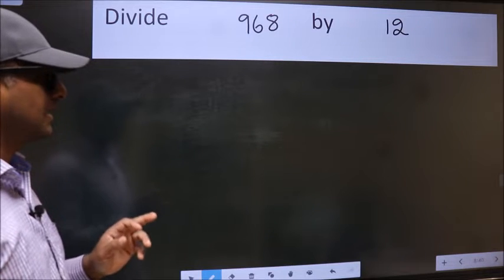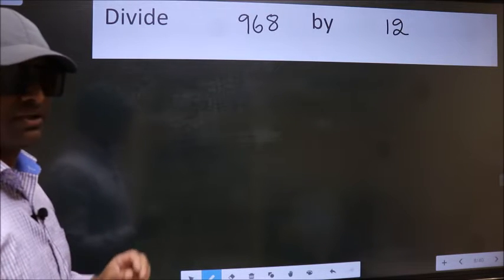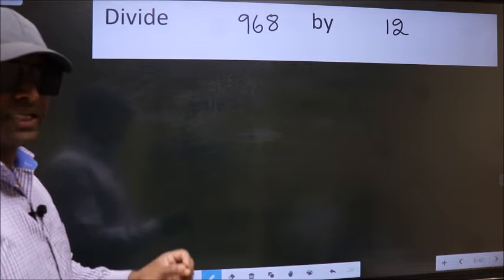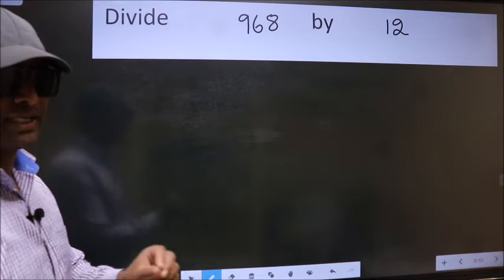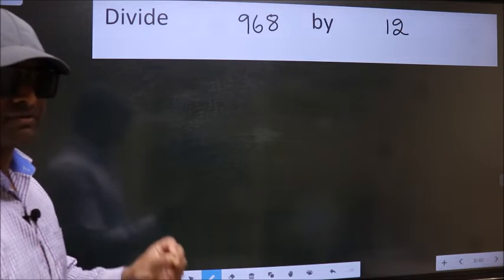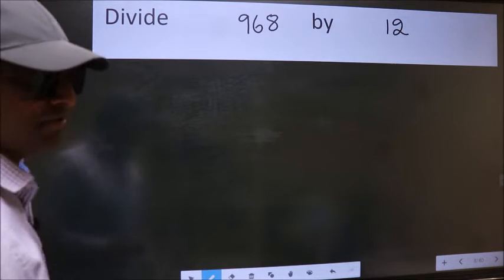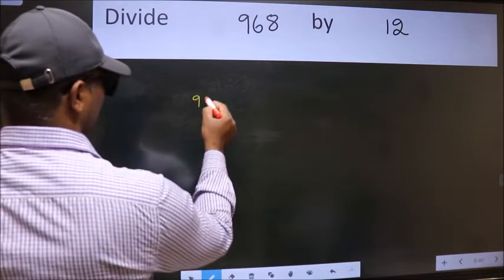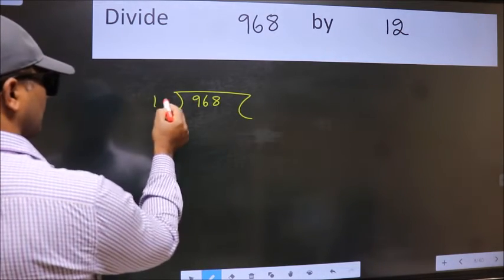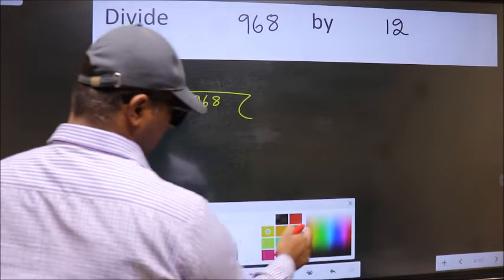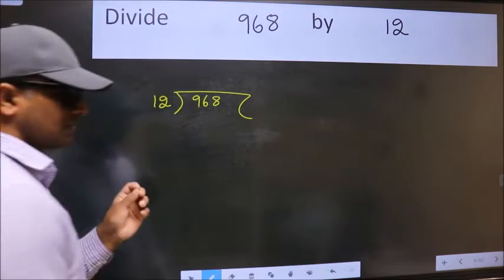Divide 968 by 12. While doing this division, many do this mistake. What is the mistake that they do? I will let you know, but before that we should frame it in this way: 968 here, 12 here. This is your step one.